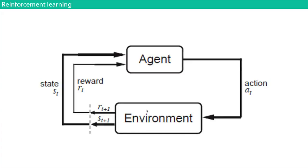But before we get to Go, let's talk about what reinforcement learning is. Reinforcement learning is only part of the whole Go system, but a lot of what we'll discuss is RL. Reinforcement learning is the third branch of machine learning — traditionally there's supervised learning, unsupervised learning, and reinforcement learning. Supervised and unsupervised are very related, but the reinforcement learning problem setup is completely different.